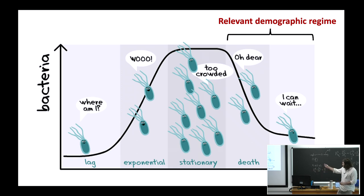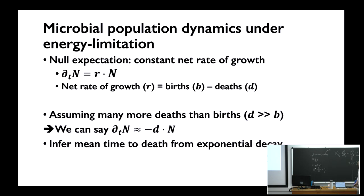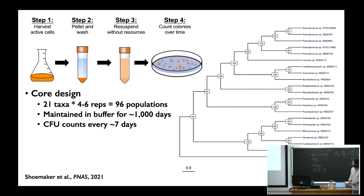Jay and I were doing a lot of experimental work in Indiana focusing on these two demographic regimes. We started out thinking about dormancy and how it influences the death rate. Under the expectation of a constant net rate of growth — defined as the difference between births and deaths — you can say that the observed change in population size reflects the death rate, and from that you can parameterize mean time to extinction and mean time to death of individual cells from a model of exponential decay.